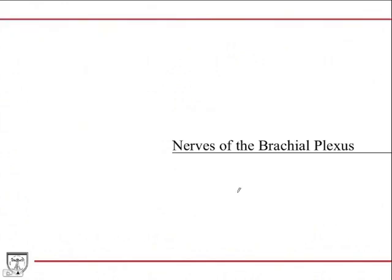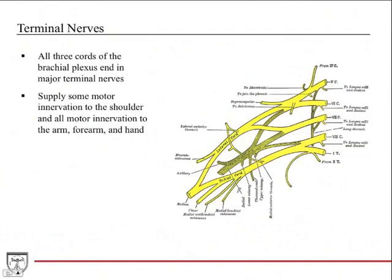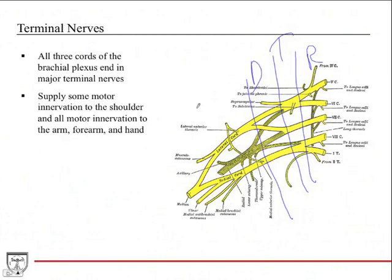Now we're going to go through the nerves of the brachial plexus, both terminal and non-terminal. Starting with roots, trunks, divisions, cords, and then terminal nerves. These nerves supply motor innervation to the shoulder and all of the upper extremity — the arm, the forearm, and the hand.